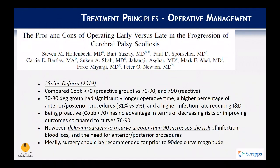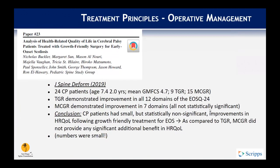However, delaying surgery to greater than 90 degrees did increase the risk of infection, blood loss, and the need for anterior-posterior procedures. The study concluded that surgery should really be done prior to 90 degrees — the reactive group approach of waiting past 90 degrees is probably not the best plan.